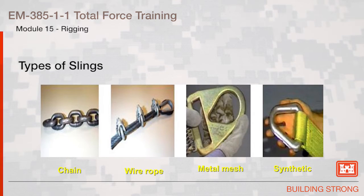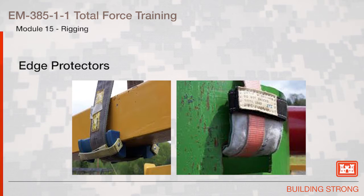There are various types of slings available: chain, wire rope, wire mesh, or synthetic web. When using rigging, edge protectors are required. These pictures illustrate various types of edge protectors used to protect a webbing type sling.